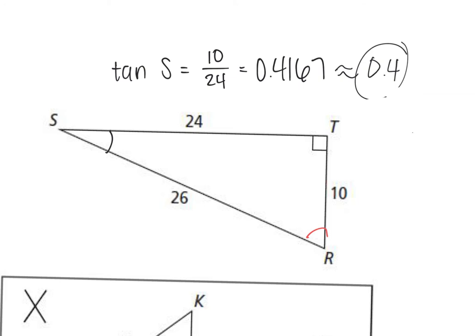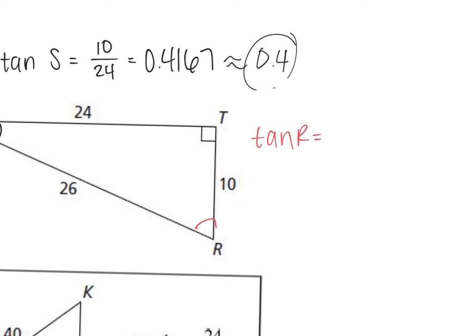What would the tangent of R be? It would be 24 over 10, which is just 2.4.